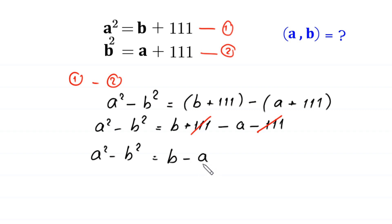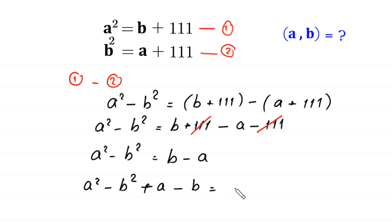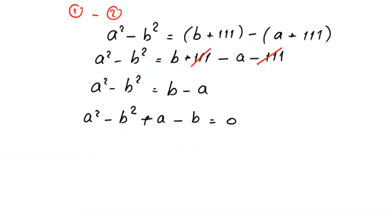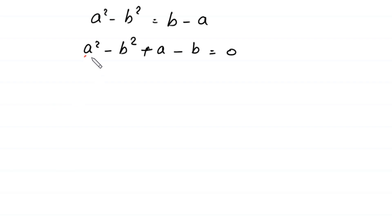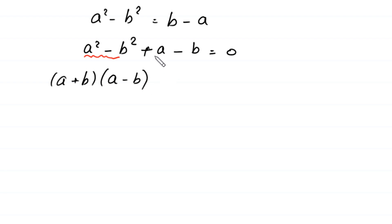We move the negative a and b to the left-hand side. Then a squared minus b squared, plus a minus b, is equal to 0. Now, a squared minus b squared equals a plus b times a minus b. From these two terms we can factor out plus 1 as a common factor, leaving a minus b equal to 0.